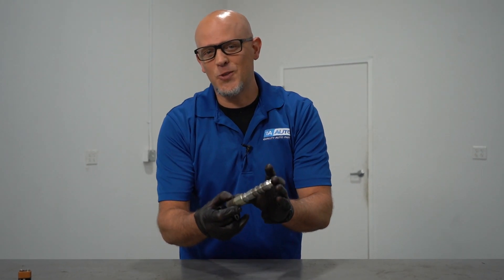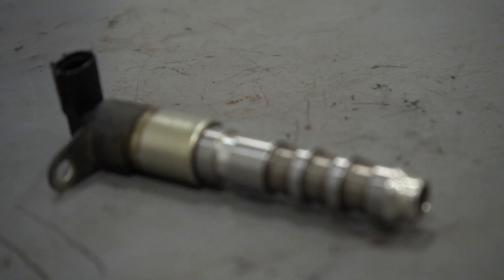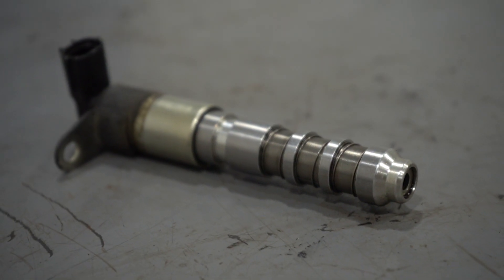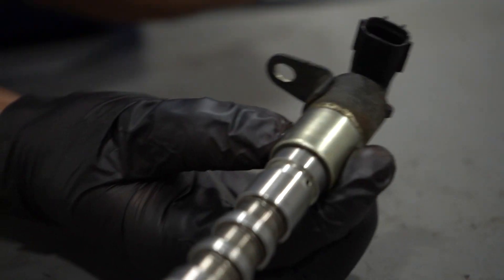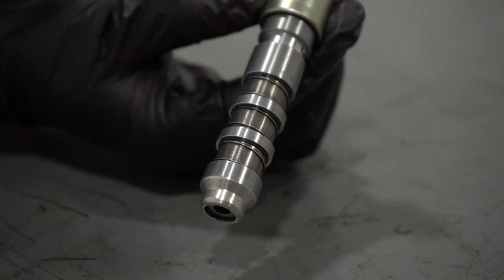Here we have a VVT solenoid. Now this is going to change the cam timing so that you get better horsepower and better fuel mileage. How this works is it controls oil pressure to an actuator on the cam itself and it can change the rotation of that.